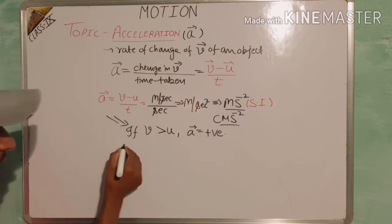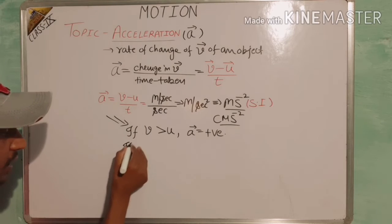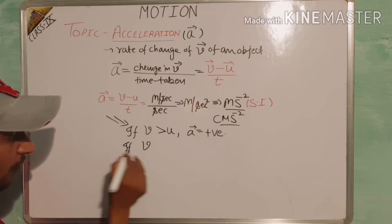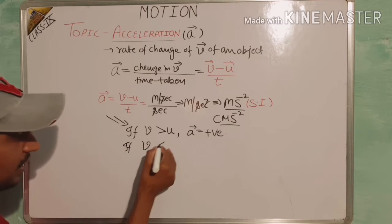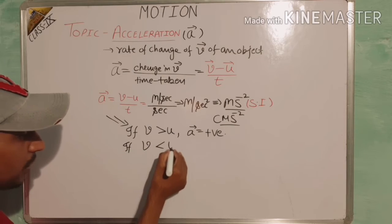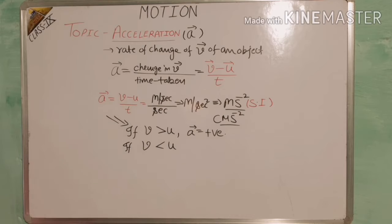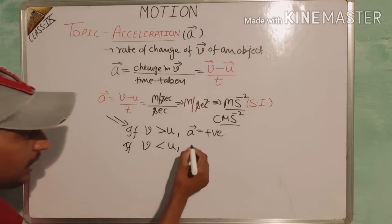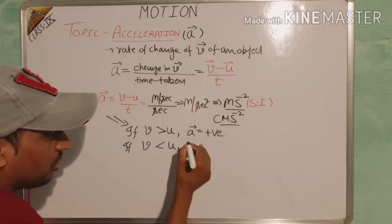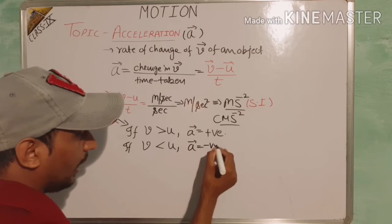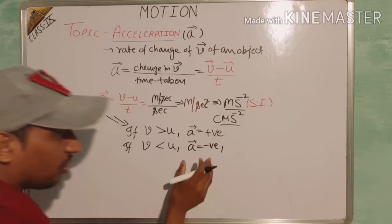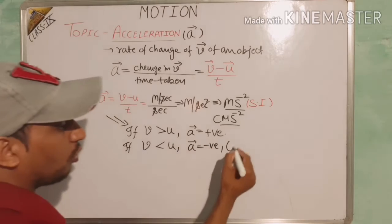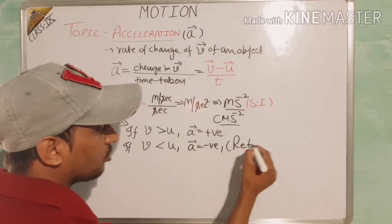In the second case, if the velocity of an object is decreasing with respect to time, the final velocity is less than the initial velocity. In that case the acceleration comes out to be negative. Negative acceleration is also called retardation or deceleration.